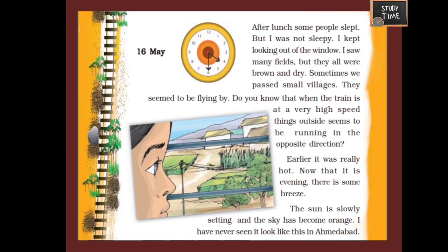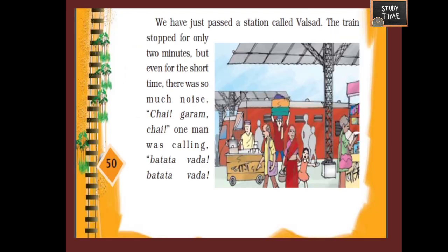After lunch some people slept, but Omana was not sleepy. She kept looking out of the window. She saw many fields but they were all brown and dry, not green. Sometimes they passed some villages that seemed to be flying by. It was really hot but by evening she could get some breeze. The sun was slowly setting and the sky had become orange — she had never seen it look like this in Ahmedabad.